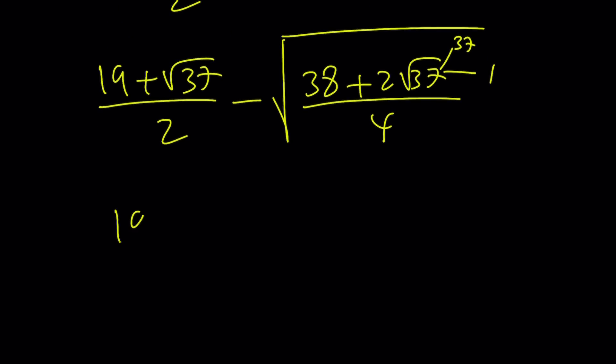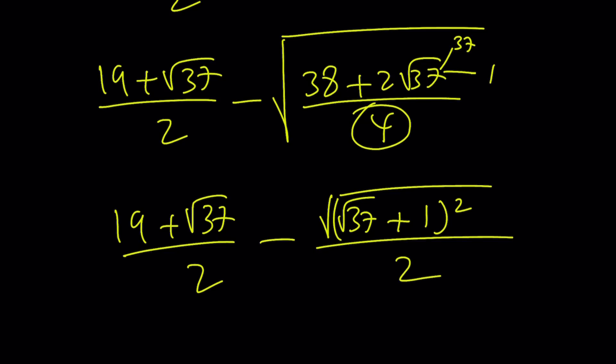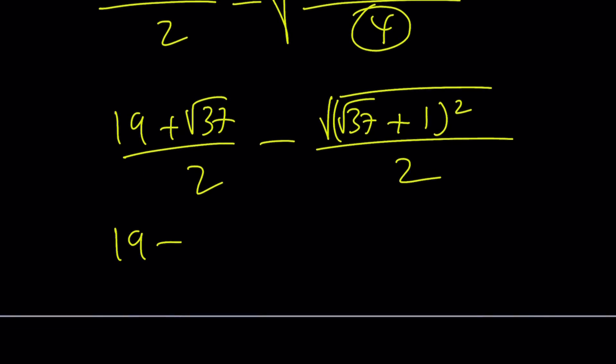So that means we can factor this as square root of 37 plus 1 squared. So we have to square root that. And at the bottom, we have the square root of 4, which is 2. Awesome. Now we can basically take it out. And we have a common denominator.